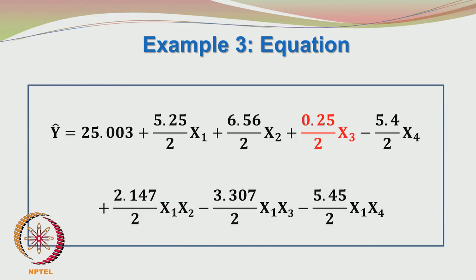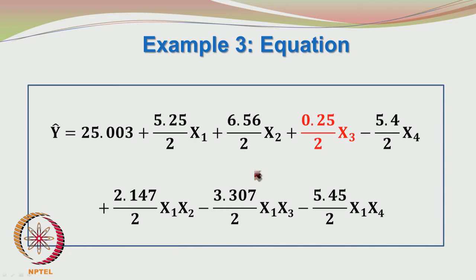Plugging in the values which we found, we have for the fractional factorial design: predicted y equals 25.003 plus (5.25/2)x₁ plus (6.56/2)x₂ plus (2.147/2)x₁x₂ minus (3.307/2)x₁x₃ minus (5.45/2)x₁x₄. Except for factor 3 or factor C, all others are present in the model. You are dividing the effect by 2 to account for the jump from −1 to +1, so the effects divided by 2 are the coefficients of the model equation.